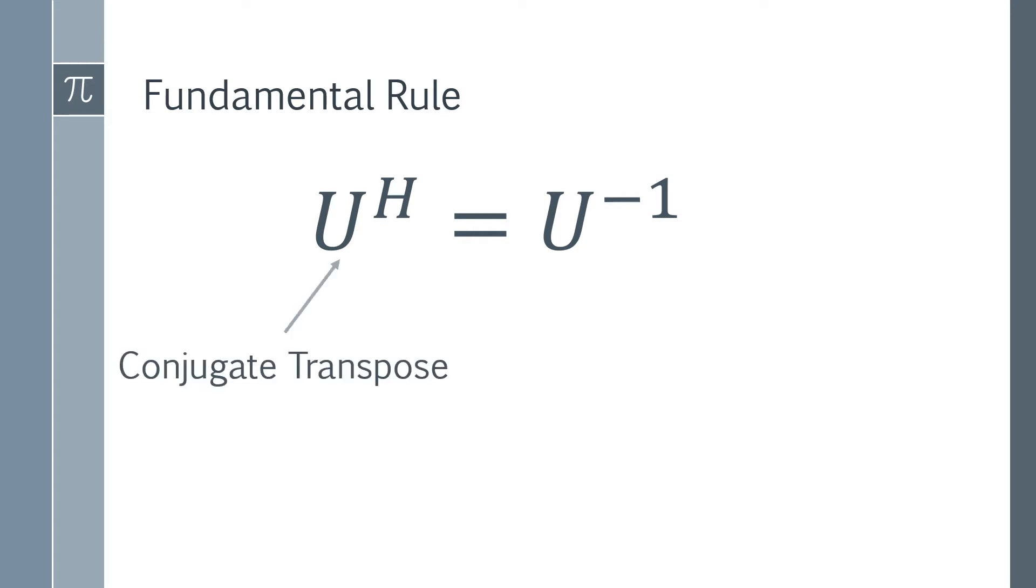On the left hand side we've got the conjugate transpose, on the right hand side we have the inverse. The conjugate transpose is also called the Hermitian, which is why we have that letter H there.